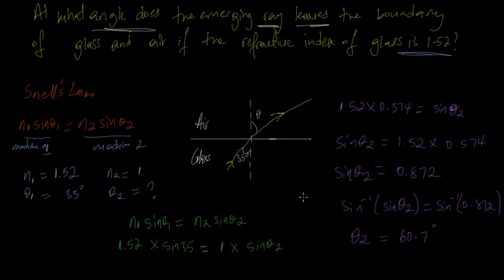So it therefore means then that the angle or the ray entered at an angle of 35 degrees when traveling in glass, met a boundary of glass and air, and then emerged with an angle of 60.7 degrees. So we can see that θ₂ is equal to 60.7 degrees. So this is how we would apply Snell's Law to a problem like this.